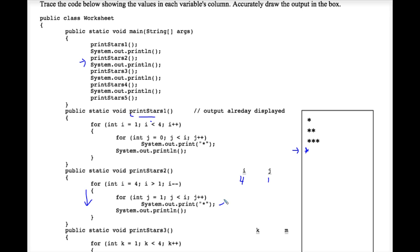We loop back up to the top of the inner for loop and j++. We check that j is less than i — 2 is less than 4 — so we go through the inner loop again and print another star. We loop back up, j++, check again — 3 is less than 4 — so we print a third star. We loop back up, j++, and check: 4 is not less than 4, so that's false. We are finished executing this inner for loop.